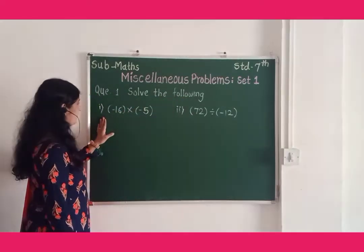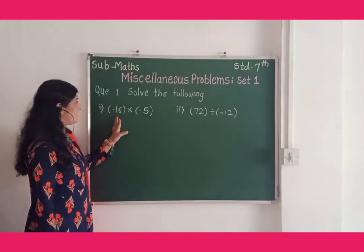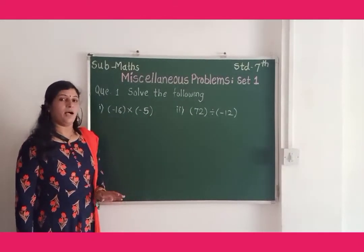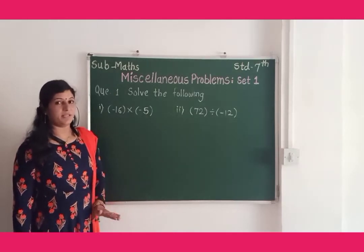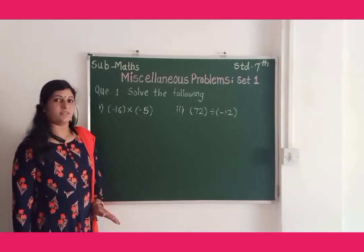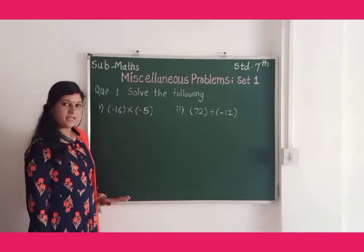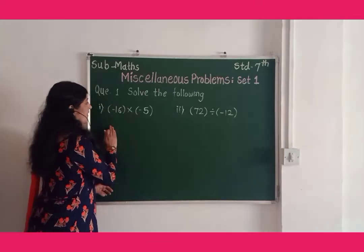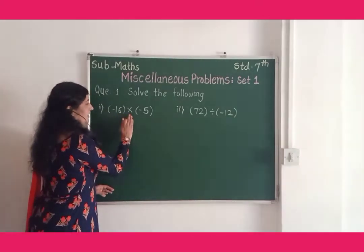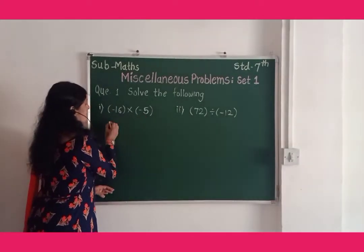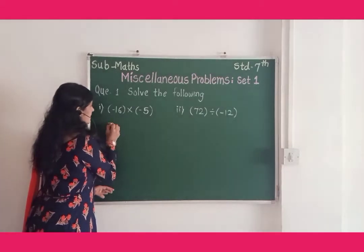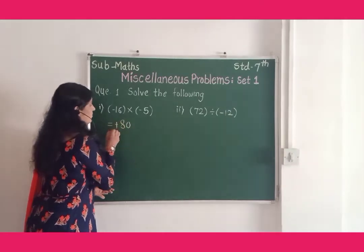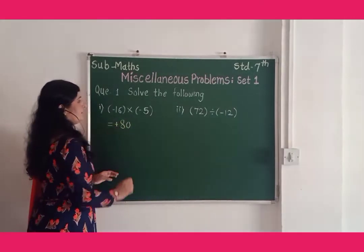The first example is negative 16 into negative 5. All of you know about rules of multiplication of integers. The product of two negative integers is a positive integer. So here, negative 16 into negative 5 is equal to 16 into 5, which is equal to 80. Our answer is positive 80.